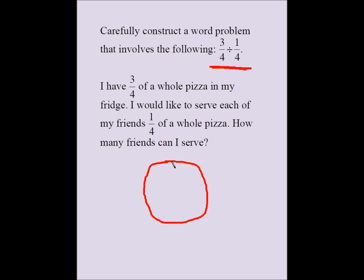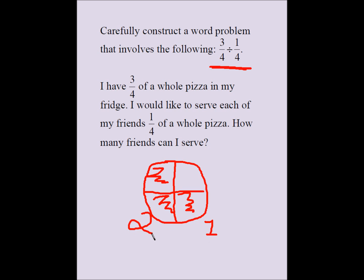This is what I have in my fridge: 3 fourths — 1 fourth, 2 fourths, 3 fourths. I want to give each friend a quarter of a pizza. How many friends can I serve? 1 friend, 2 friends, 3 friends.